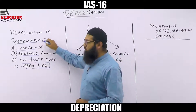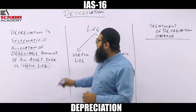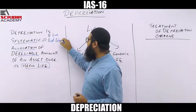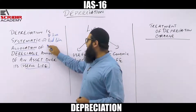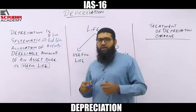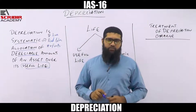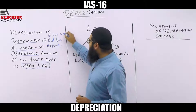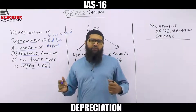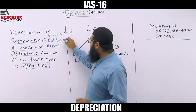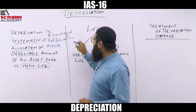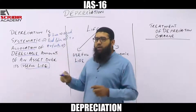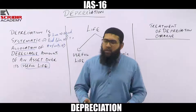What exactly do you mean by systematic allocation? You can depreciate an asset using straight line, reducing balance, or number of units method — there are multiple methods. You would use straight line if the asset gives equal benefits over its entire life, reducing balance if it gives initially high and later lower benefits, and number of units if the asset's life corresponds to the production of a certain number of units.